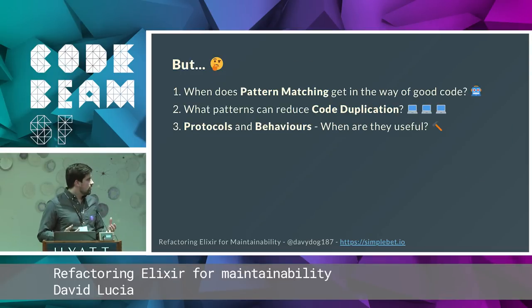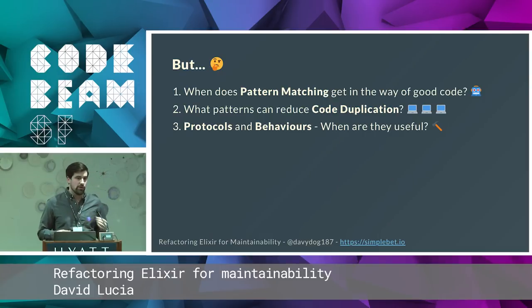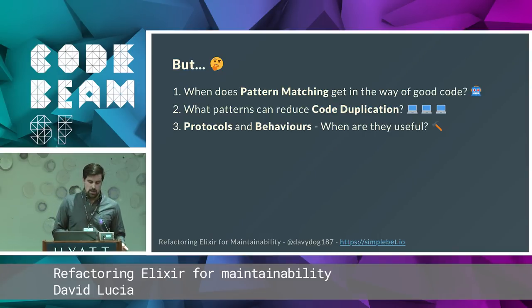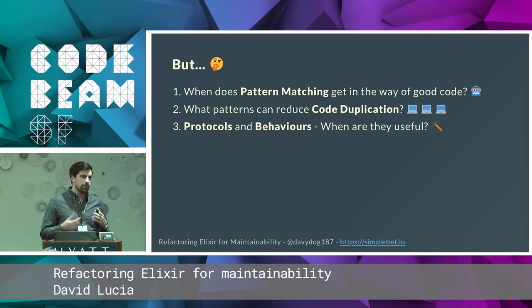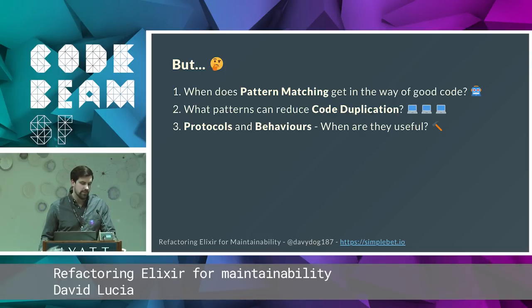But what wasn't immediately obvious to me was when pattern matching got in the way of good code — when were you pattern matching too much? It also wasn't clear when I could use certain patterns to remove code duplication. And from reading the Elixir guide, I had heard of protocols and behaviors, but I didn't really understand when I would want to use them and when they were useful.